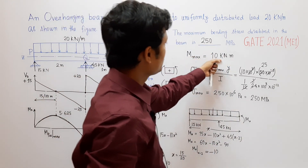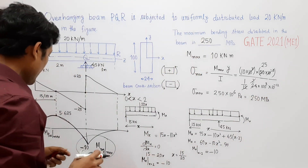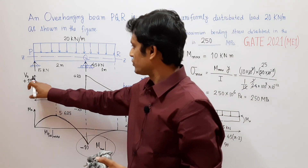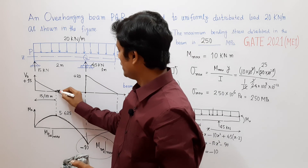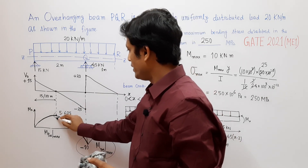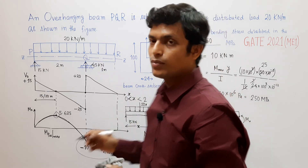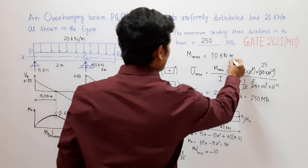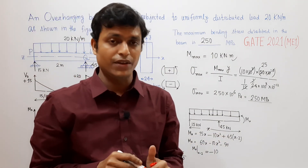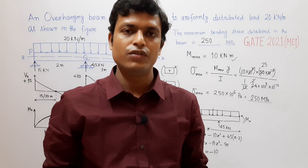So the maximum bending moment is 10 kilonewton meter and the maximum bending stress developed in the beam is 250 MPa. We first plotted the shear force diagram and found sign changes at two points; then constructed the bending moment diagram to confirm the maximum value. The answer is 250 MPa. Hope you have understood — thank you for watching and please subscribe to the channel for new videos on mechanical engineering.